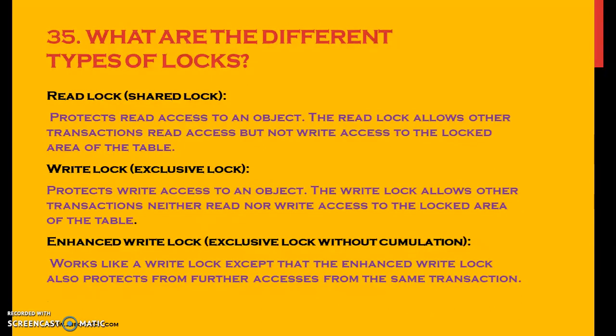So what are the different types of locks? There are three types of locks: read lock, write lock, and enhanced write lock. A read lock is a shared lock that protects read access to an object — it allows other transactions read access but not write access to the locked area of the table. A write lock is an exclusive lock that protects write access — it allows other transactions neither read nor write access to the locked area. An enhanced write lock works like a write lock except that it also prevents further access from the same transaction.